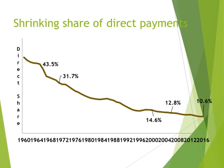Shrinking share of direct payments: direct payments are private insurer payments or payments from individuals who do not have insurance, also called self-payers. We are seeing a shrinkage of that over the last years, from 1960 to 2016, dropping from over 44% down to almost 11%.